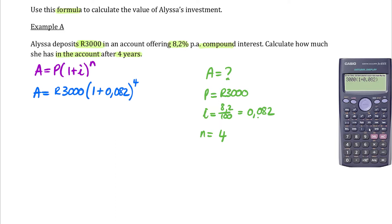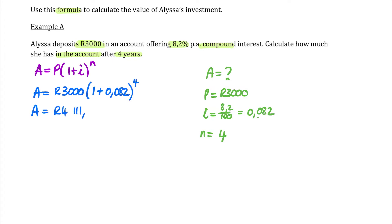So if we type that into our calculator, and we use this button to choose our exponent, and our exponent here needs to be four. So if we type that in, we get the answer 4,111 Rand and 78 cents. And if you go back to yesterday's work and look at example A with Alyssa, we see that we got to exactly the same answer, but with a lot more work.